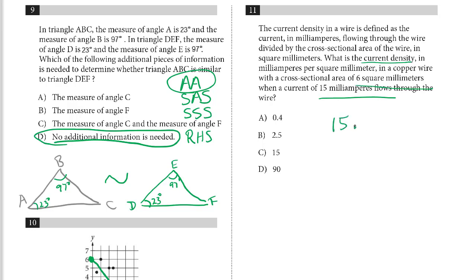it's going to be 15 milliamperes divided by the 6 millimeters squared cross-section, which leaves us a value of 2.5. The correct answer for 11 is B, 2.5.